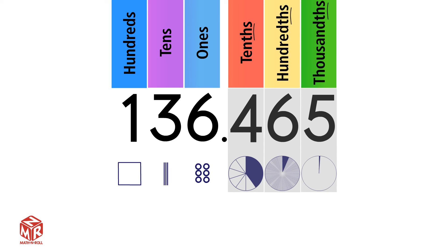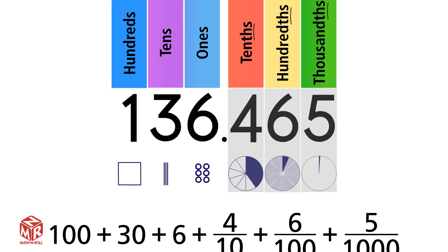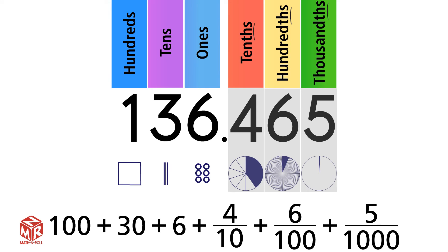Let's write the decimal number in expanded form: 100 plus 30 plus 6 plus 4 over 10 plus 6 over 100 plus 5 over 1000.